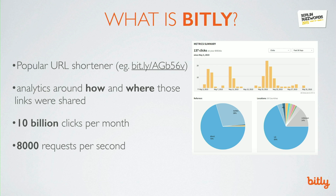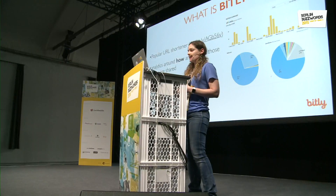For those who haven't heard of Bitly, we're a really popular URL shortener. Most of our stack is written in Python and Go, and on average we serve around 8 to 10 billion clicks per month, which works out to be about 8,000 requests per second. We compute a lot of interesting analytics around how and where those links are shared, so we get to tackle lots of interesting problems of scale at Bitly, and one of the core pieces of our architecture is NSQ.